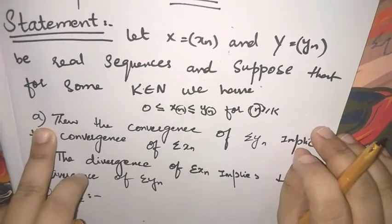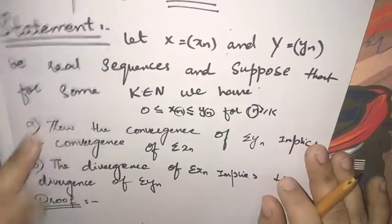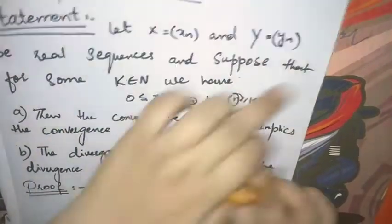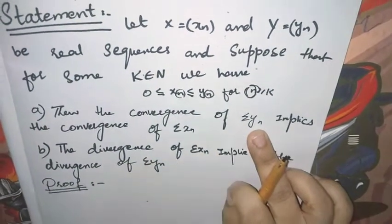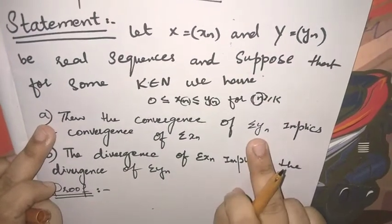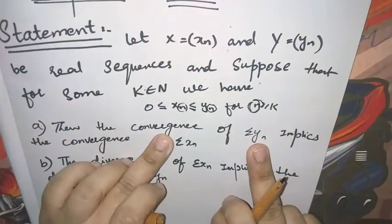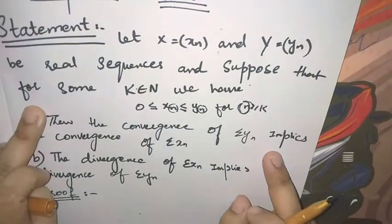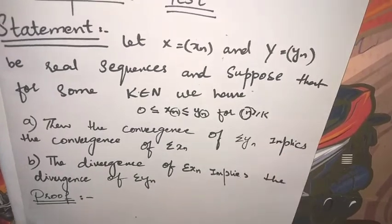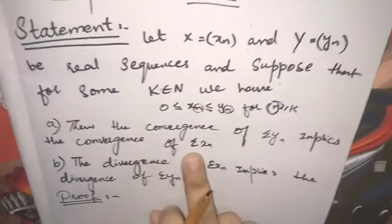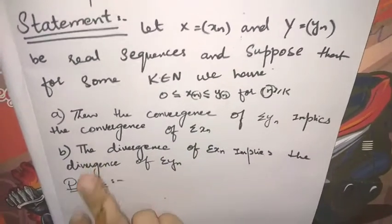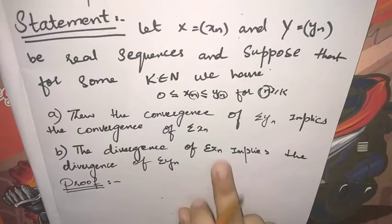اب یہاں پر ہمیں proof کیا کرنا ہے؟ Part A ہمیں کہہ رہا ہے: then the convergence of series yn implies the convergence of series xn۔ دوسرا ہمیں یہ proof کرنا ہے کہ the divergence of series xn implies the divergence of series yn۔